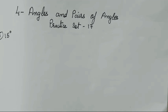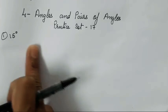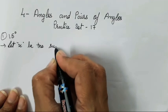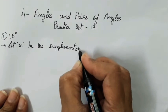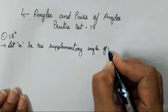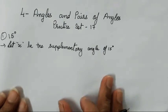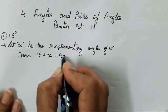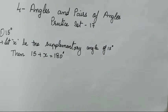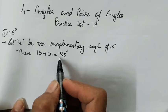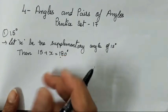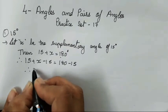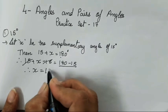Write the measures of the supplement of angles given below. We have to find the supplement of 15 degrees. So let x be the supplementary angle of 15 degrees. Then 15 plus x is equal to 180 degrees, because it's a supplementary angle — if it were complementary we would take 90. Therefore 15 plus x minus 15 equals 180 minus 15, so x equals 165.